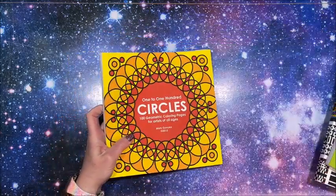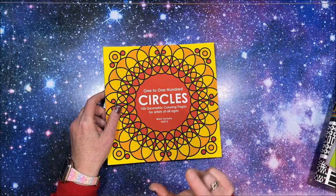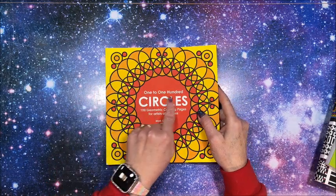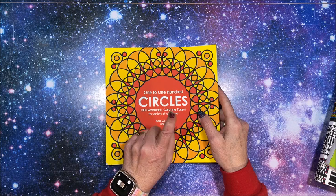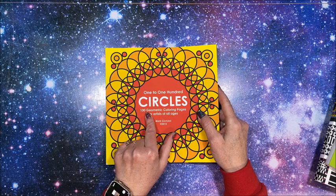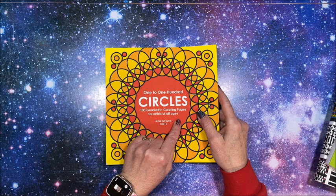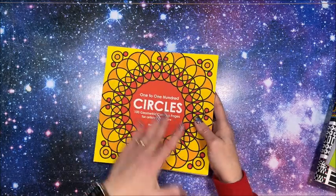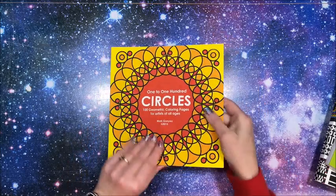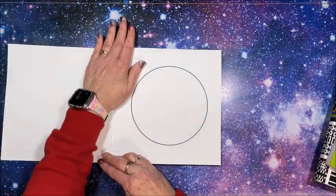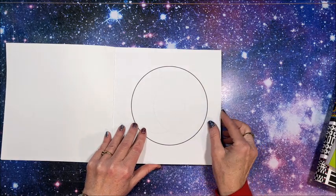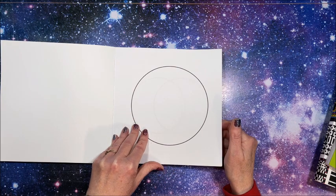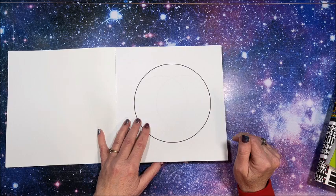The first and second books are very similar. It's called One to 100 Circles and there's a reason for that. There are 100 geometric coloring pages for artists of all ages. This is the front cover, just a plain back cover with that matte finish. Now the premise of this book is every single page is going to have one more circle than the previous page.